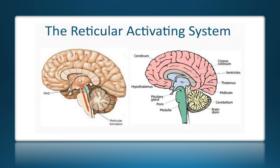The reticular formation system is what they call the primitive brain. It receives information from the cortex and innervates the thalamus, hypothalamus, and the cortex. Its regulatory functions include involuntary movement reflexes, muscle tone, vital sign control, blood pressure, and respiratory rate. It's also critical to consciousness and the ability to mentally focus, be alert, and pay attention to environmental stimuli.